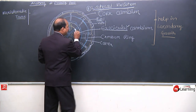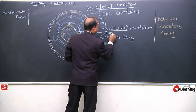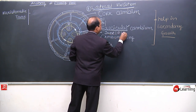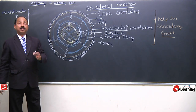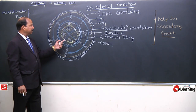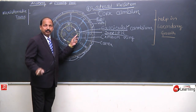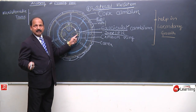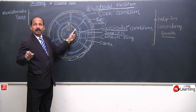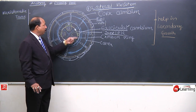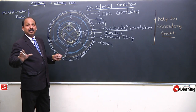Inter-fascicular cambium — it is also lateral in origin and position. So we say: fascicular cambium is an example of lateral meristem, inter-fascicular cambium is an example of lateral meristem, and the entire cambium ring is an example of lateral meristem.